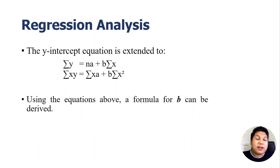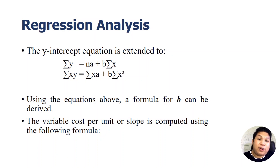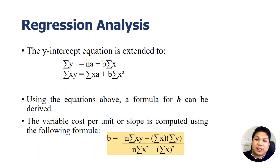To clarify, in our previous lecture it was y equals mx plus b, where b was the fixed cost and m was the slope. In this analysis, we relabeled: y equals a plus bx, where a is the fixed cost and b is the slope. The variable cost per unit, or the slope, is computed using the formula: b equals n times the summation of xy, minus the summation of x times the summation of y, all over n times the summation of x squared minus the squared of the summation of x. That is how we compute the slope, and we will use all data points.